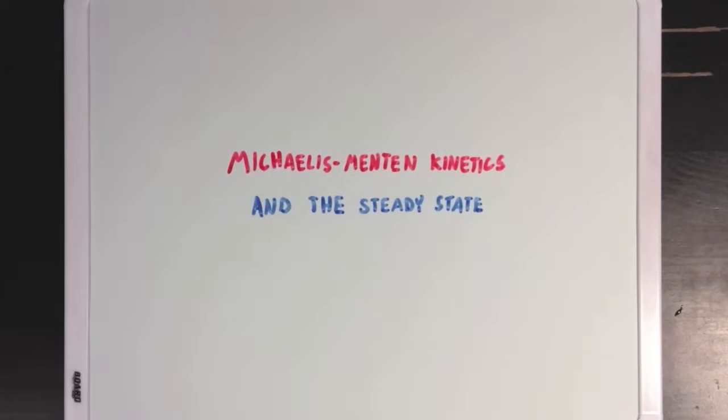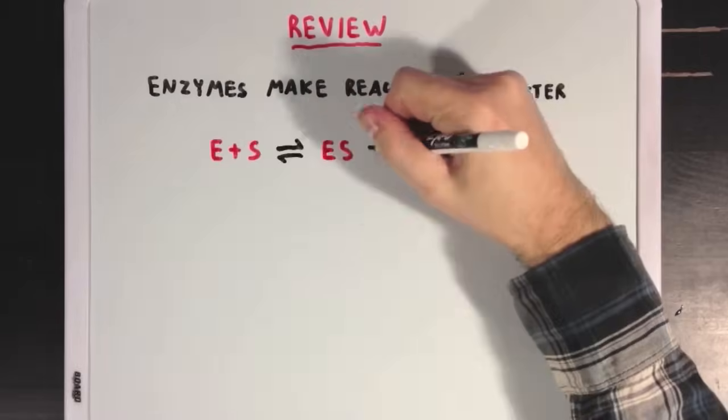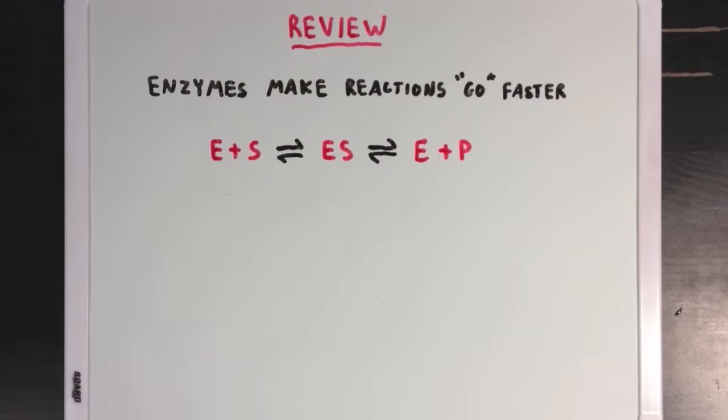So, today we're going to talk about Michaelis-Menten kinetics in a steady state. But first, let's review the idea that enzymes make reactions go faster, and that we can divide the enzyme's catalysis into two steps.